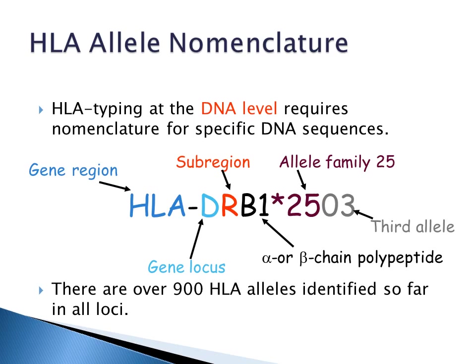HLA typing at the DNA level requires nomenclature for specific DNA sequences. Again, you have your gene region, your gene locus and sub-region, your alpha or beta chain polypeptide, an asterisk, and then your allele family, and then the next allele. So in this case, the allele family 25 and the third allele.